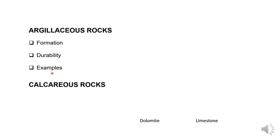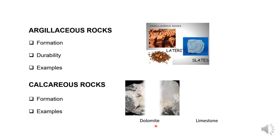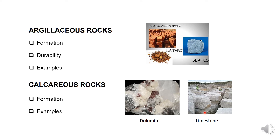Examples of argillaceous rocks are slate and laterite. We can see images of laterite and slates, which appear in the form of bricks. Calcareous rocks are formed with calcium carbonate as the principal constituent. They also contain a proportion of siliceous and clay material. Examples of calcareous rocks are dolomite, which appears as a white stone, and limestone, which appears grey in colour.